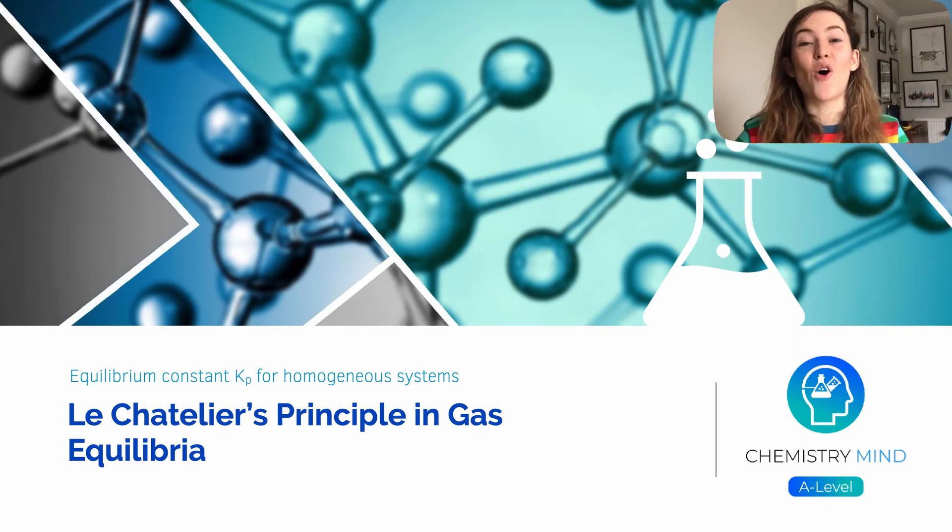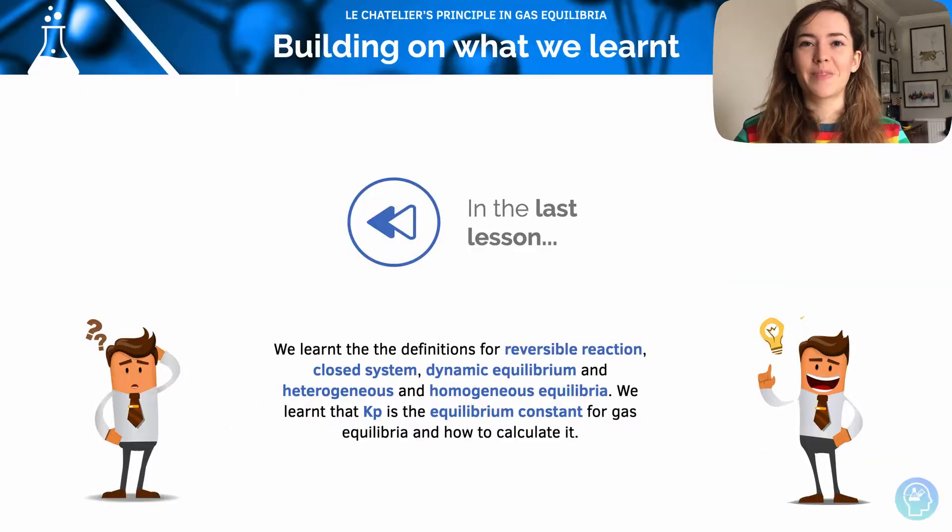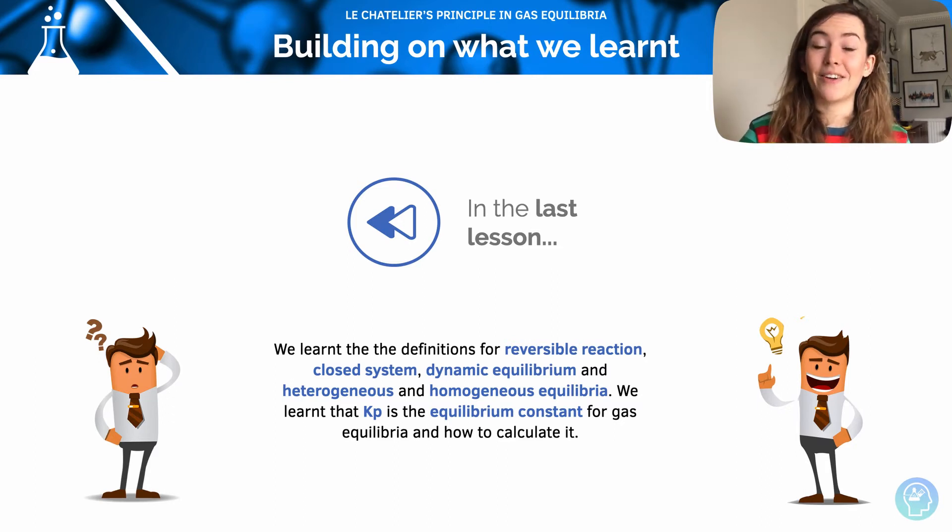Hi and welcome to this lesson on Le Chatelier's Principle in Gas Equilibrium. In our last lesson we had a look at some definitions, so we explored reversible reactions, what closed systems are, dynamic equilibrium, heterogeneous and homogeneous equilibrium as well. And we learned that Kp is the equilibrium constant for gas. We learned how to calculate it and calculate its units.